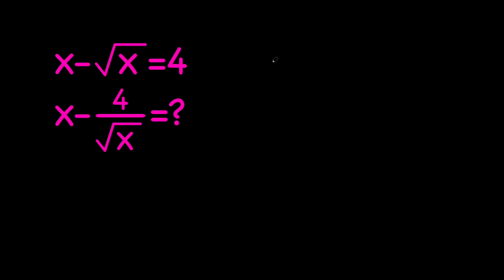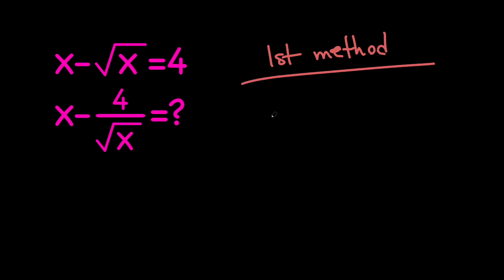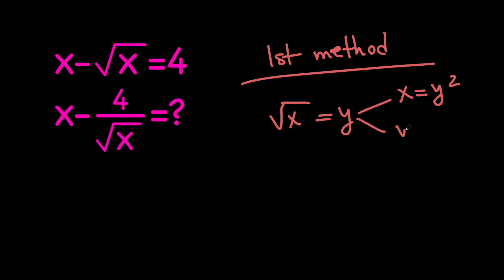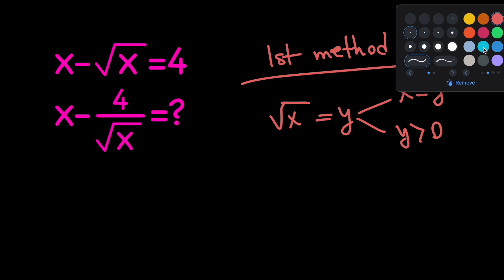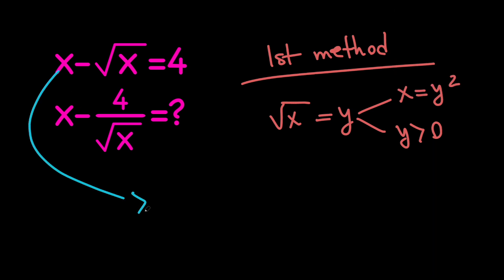Now let's go ahead and talk about the first method. Here's what we're going to do: we're going to replace root x with y, which means that x equals y squared, and y is a positive quantity. If we do all of these replacements, we're going to have y squared minus y equals 4.